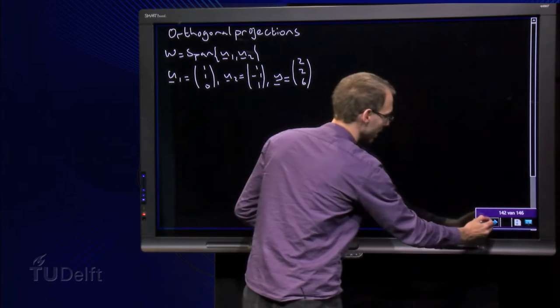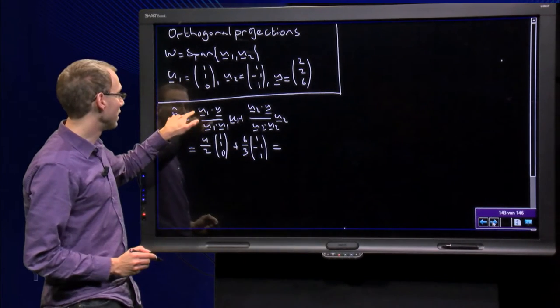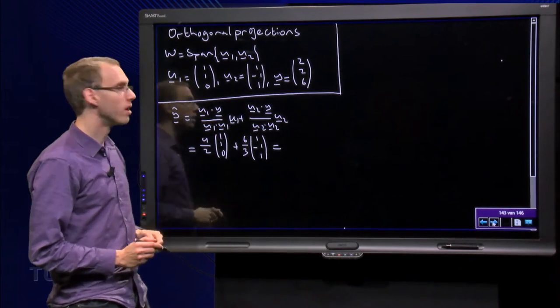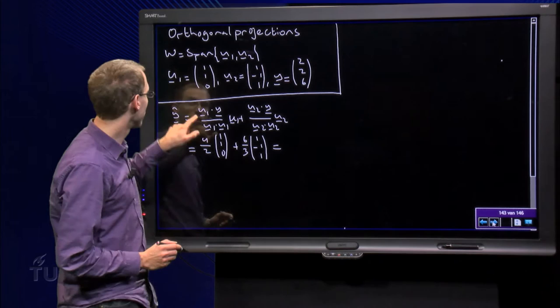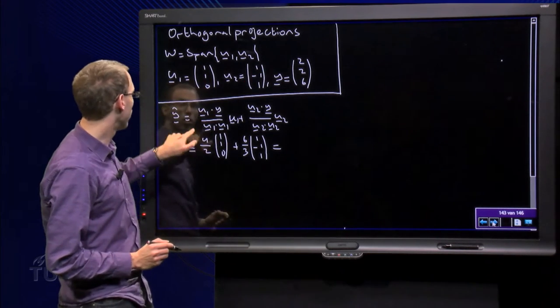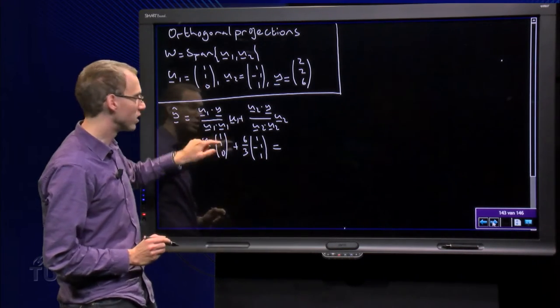So how do we find y-hat? We have an explicit formula: y-hat equals the projection onto u1 plus the projection onto u2. u1 dot y equals 2 plus 2 equals 4, over u1 dot u1, which is 1 plus 1 equals 2, times u1, which is [1, 1, 0].